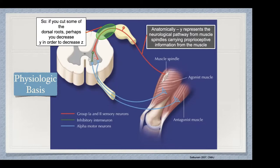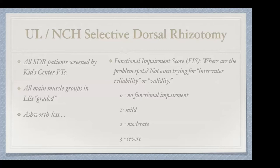Here at the University of Louisville — Norton Children's Hospital — all of our selective dorsal rhizotomy patients are screened by physical therapists with really deep experience. All muscle groups in the lower extremities are graded. This is where the difficulty comes in, because with all due respect to my physical medicine and rehab colleagues, I call it the Ashworthless scale — it's demonstrably not valid and not reproducible in the literature.